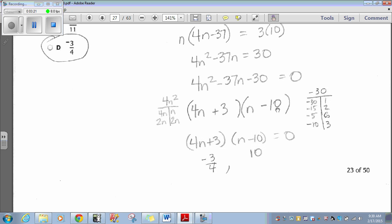Then, to double check if it's accurate, I FOIL it just to see. 4N times N is 4N squared. 4N times negative 10 is negative 40N. Positive 3 times N is a positive 3N. Negative 40N plus 3N is negative 37N. Positive 3 times negative N is negative 30.